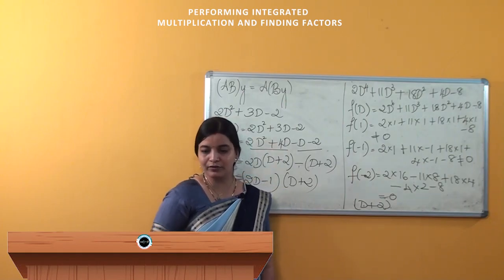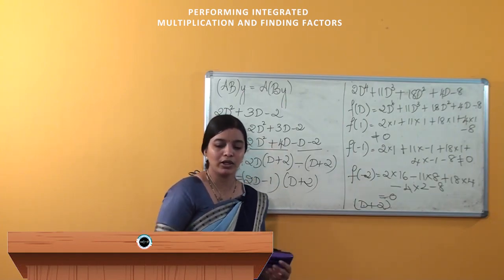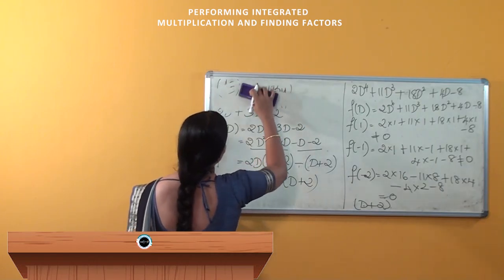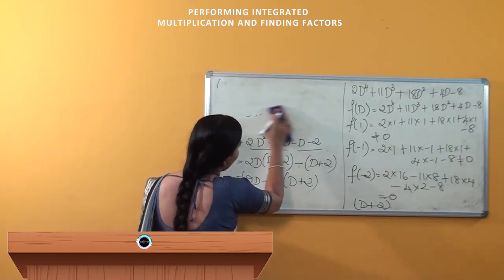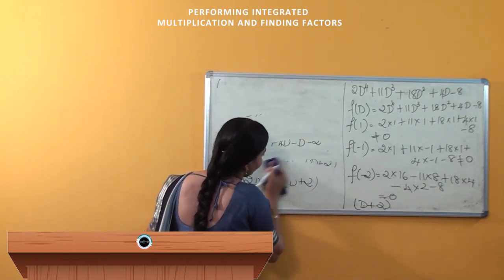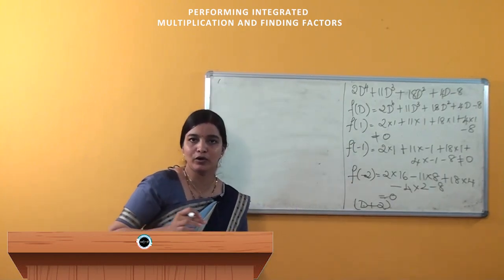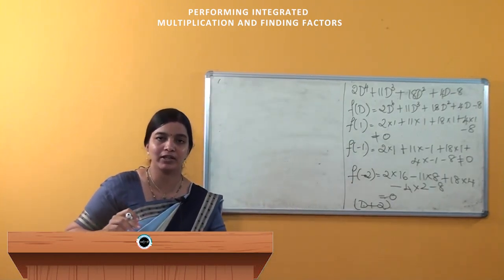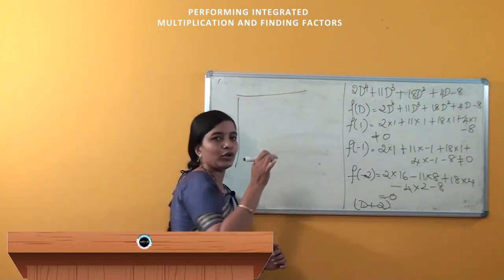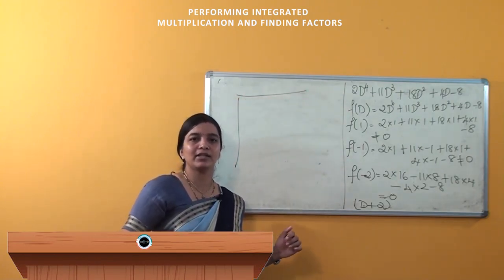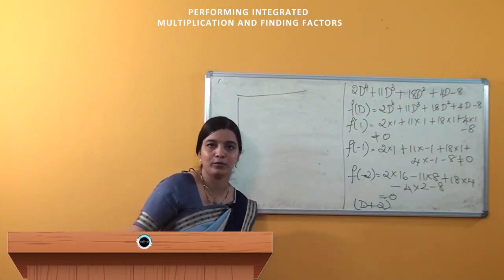So (D + 2) is one factor of f(D). To find the other factors, we use synthetic division. You know how to perform polynomial division using this method, and we will discuss how to solve it fully in the next class. Thank you.